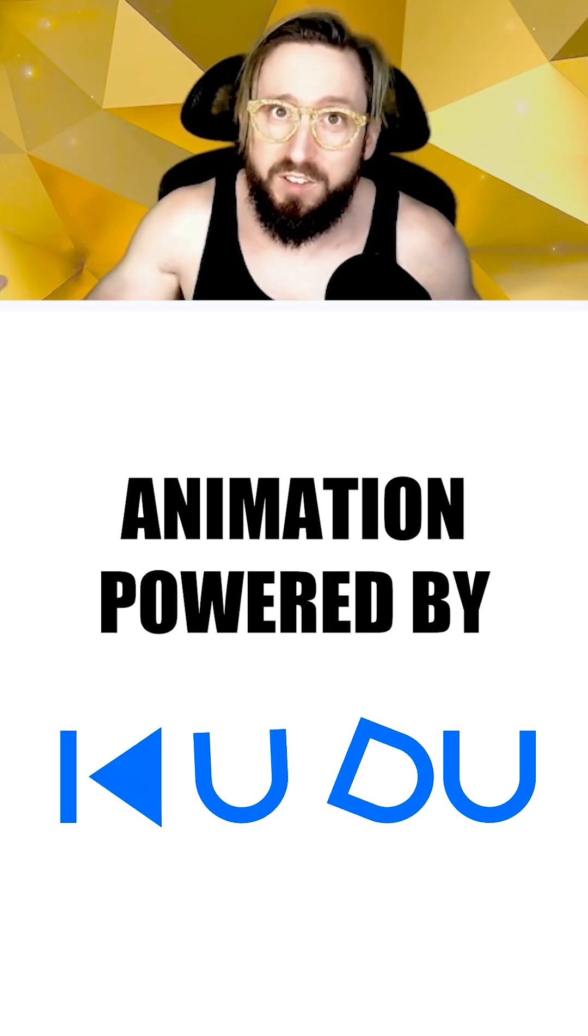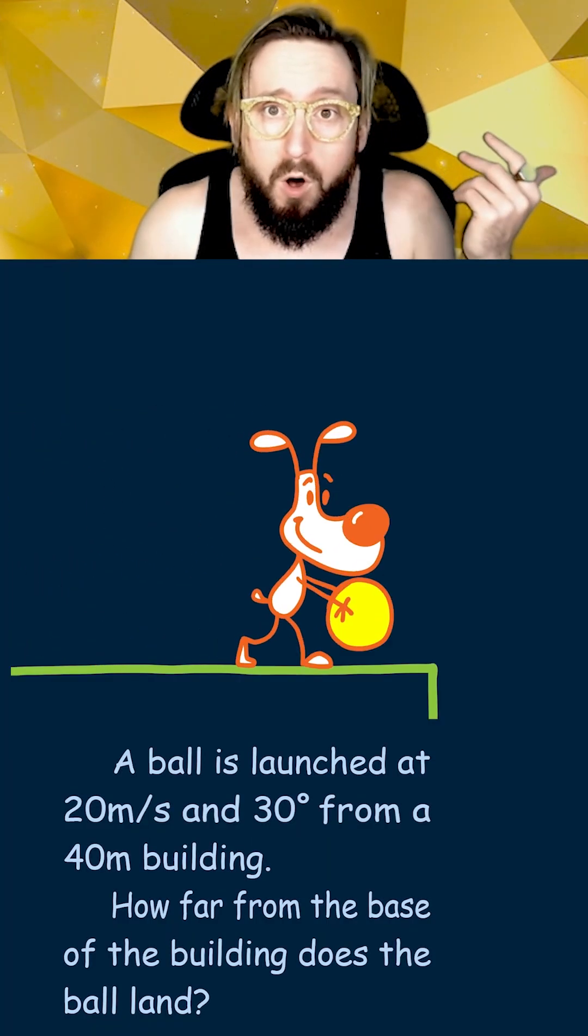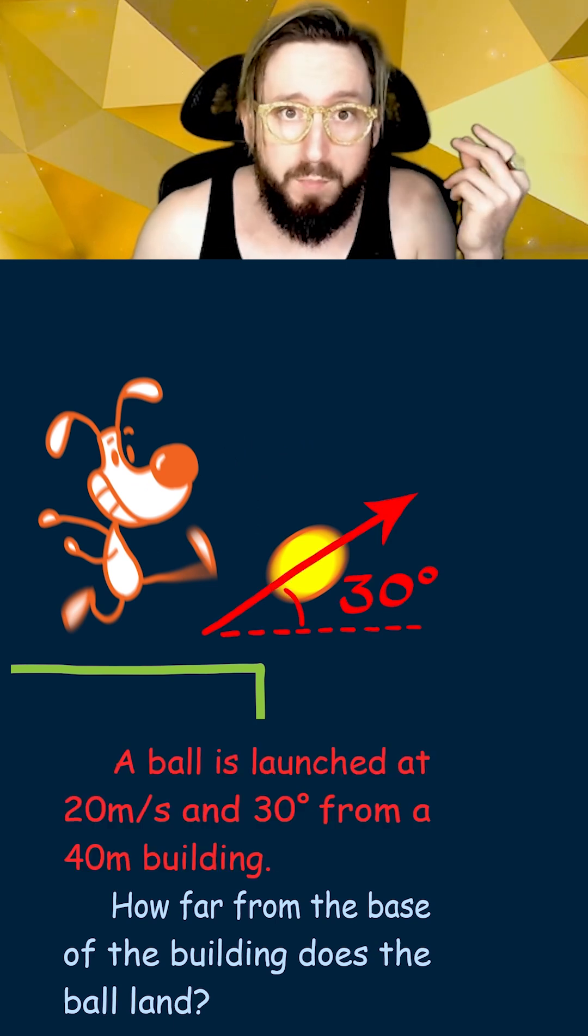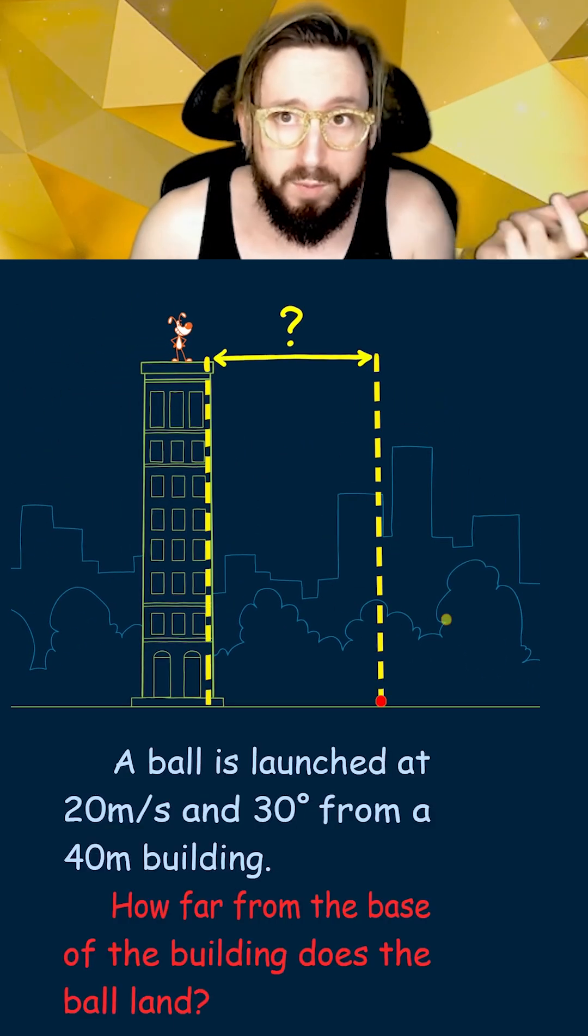Here's how to solve 2D projectile motion problems in physics. In this example, we have a ball being launched at an angle from the top of a building, and we're asked to figure out how far the ball lands from the base of the building.